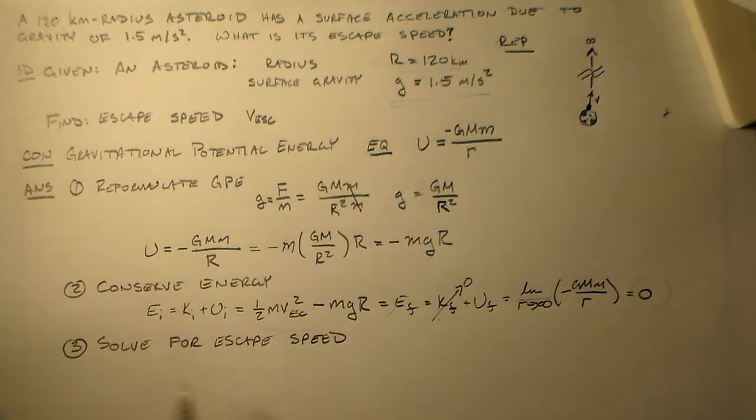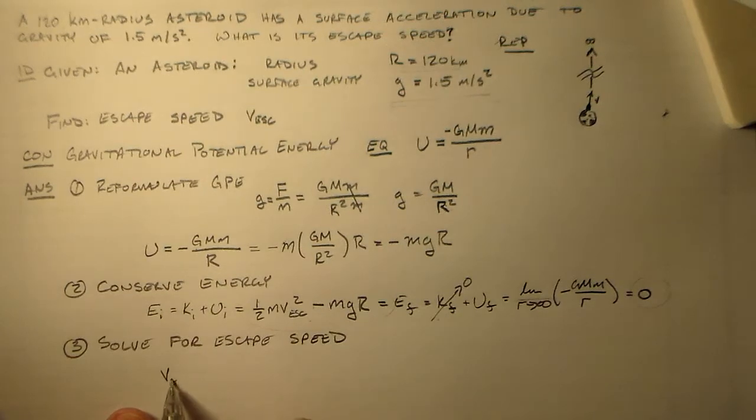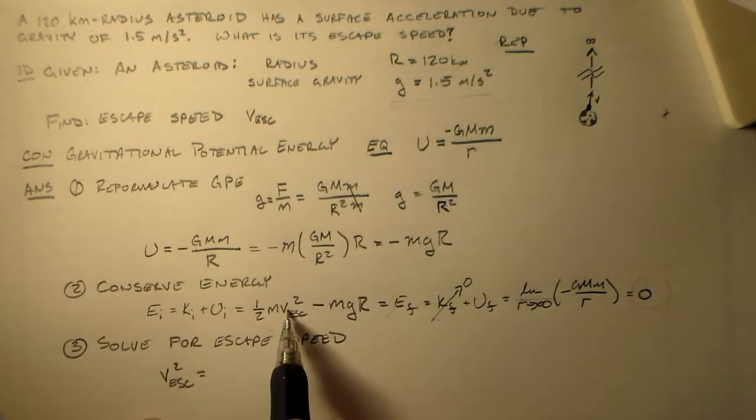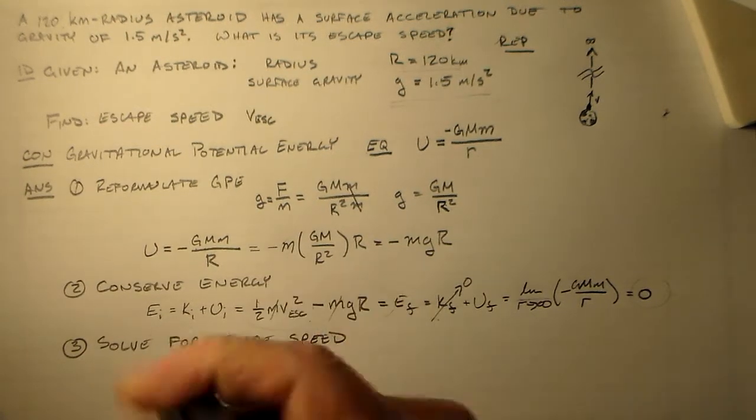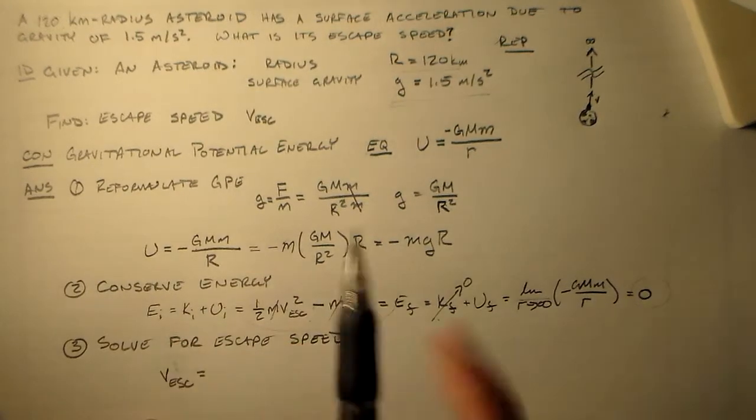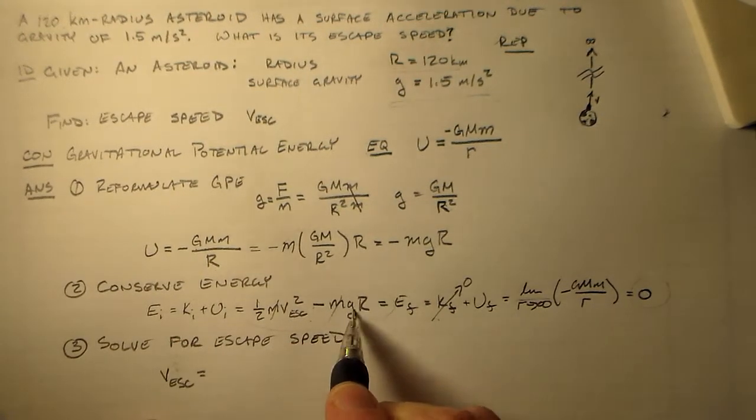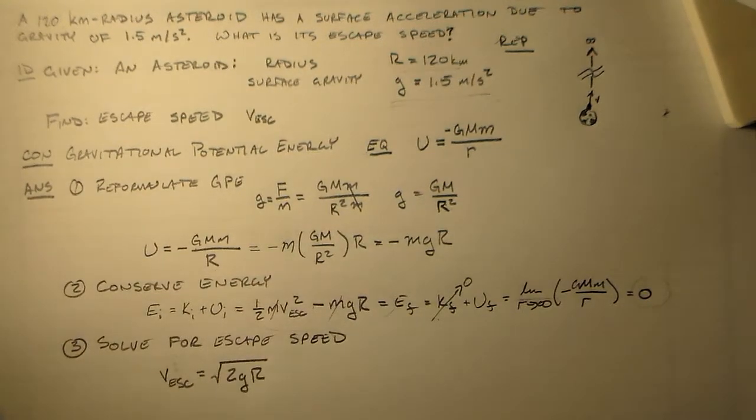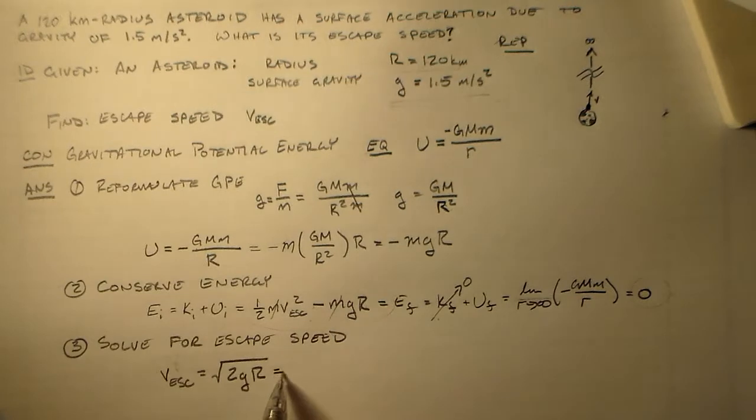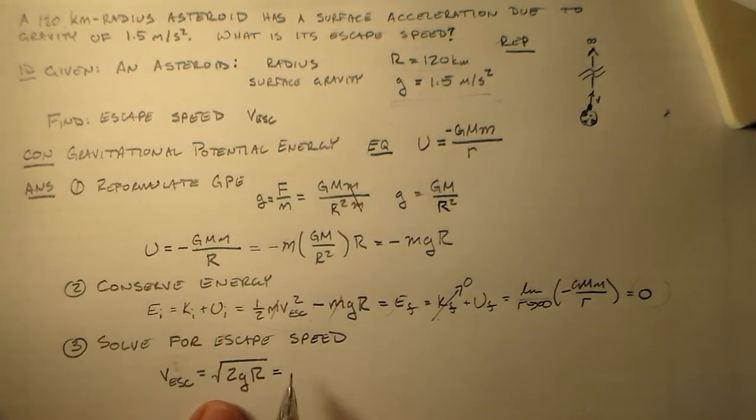So, if I solve for my escape speed, that means I have my v escape on one side, squared. We'll continue with the square for now. I cancel out these m's. Actually, let's get rid of that, because we've seen this all before. We have 2 times g times R. So, we have the square root of 2 times g times R. Okay. So, that's a nice simple thing. Right?